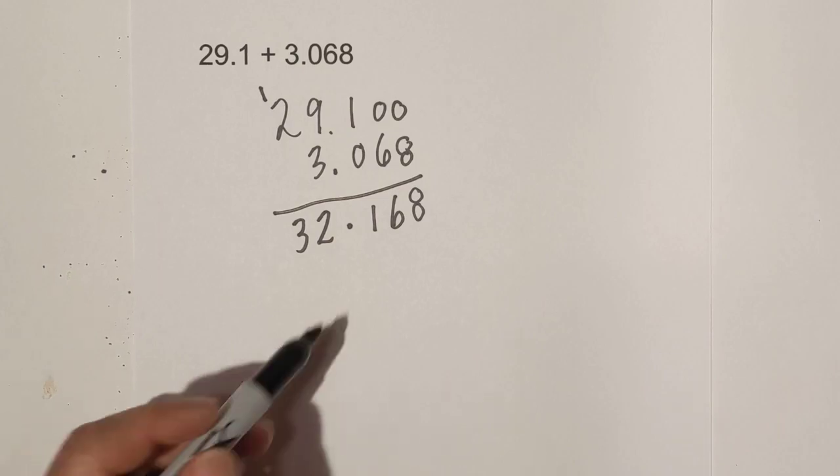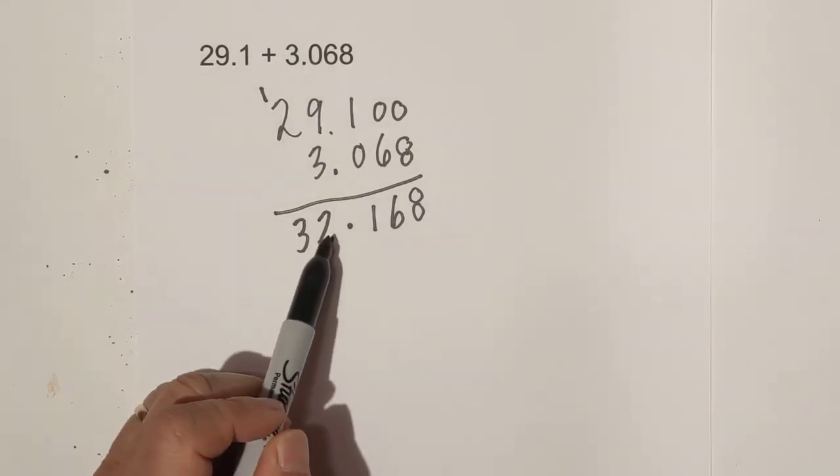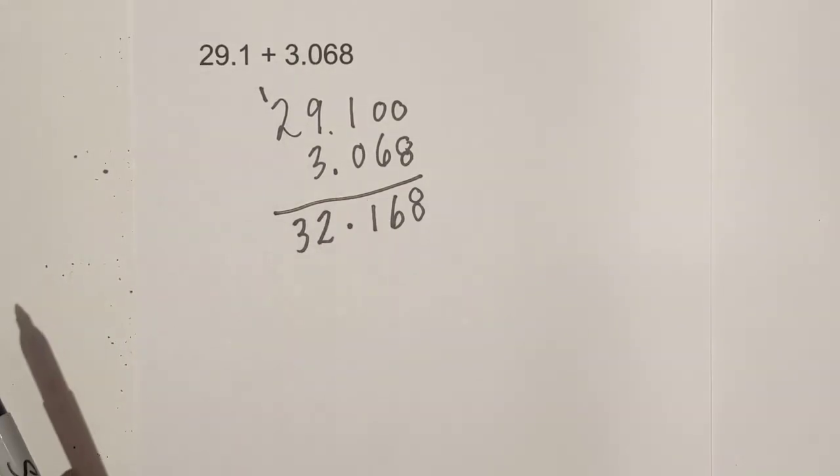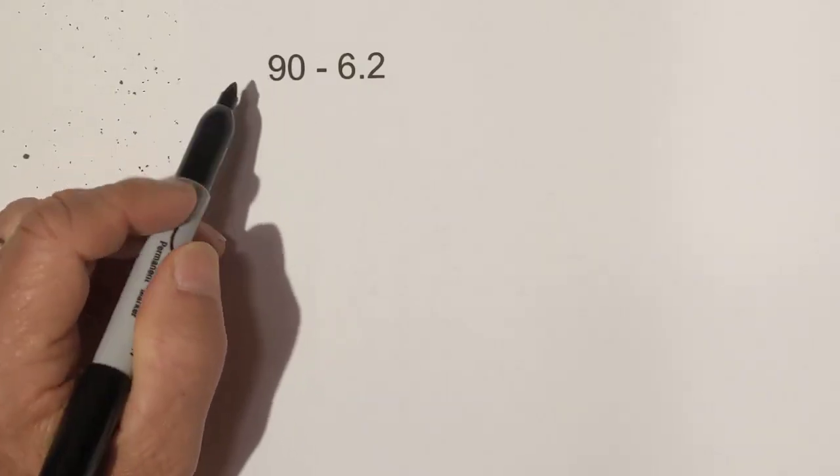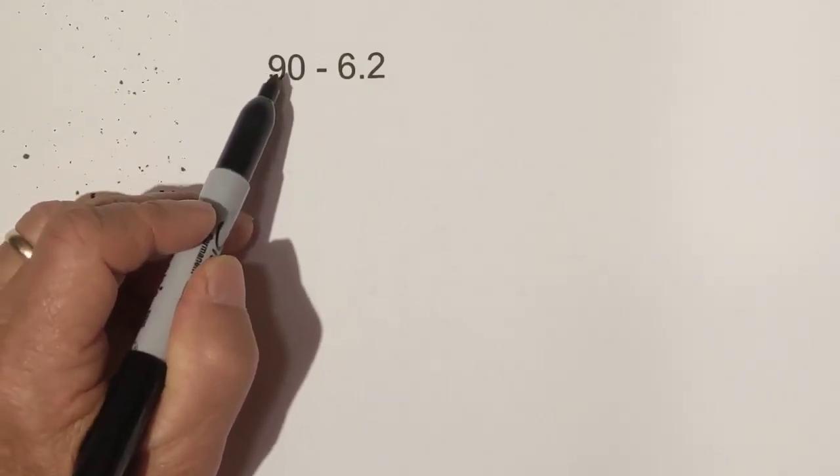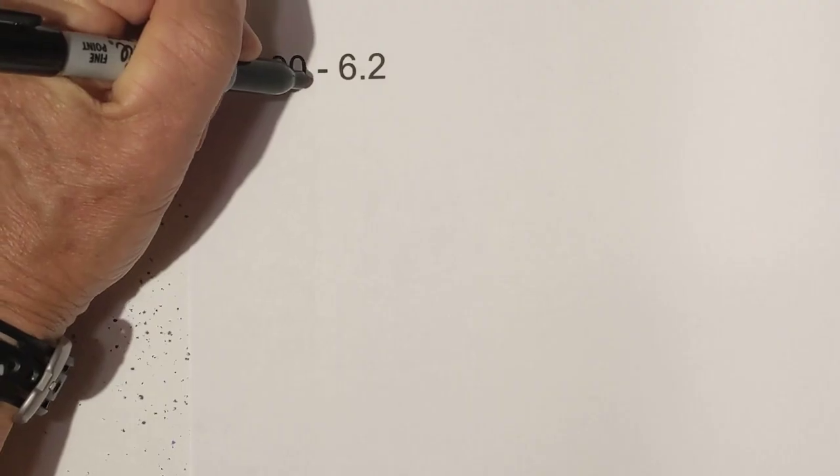Before subtraction, let me pronounce this properly: it's 32.168. Now let's work on subtraction. The same thing applies. However, when you look at 90, you may say, where's the decimal point? When you don't see a decimal point, you can assume it's to the far right.